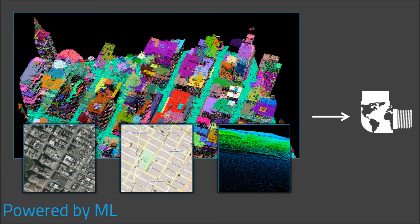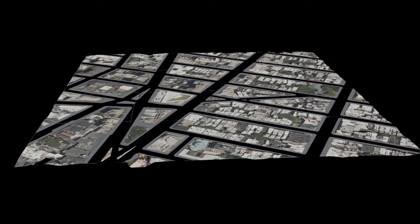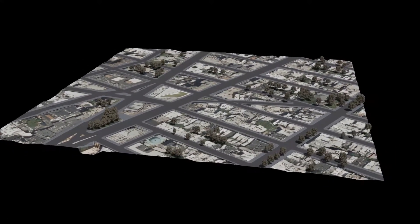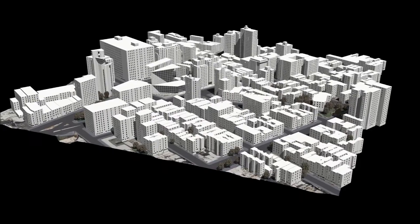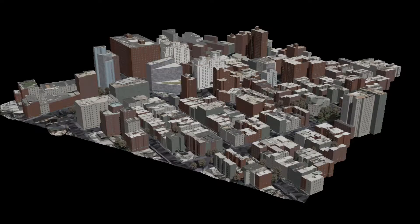Here's how it works. We start with raw data about the world, from laser scans to photographs and more. Our algorithms examine the data, understanding the shapes and facades of buildings, the locations of trees, roads, sidewalks, and water, and much more. We then turn that enriched understanding of the world into immersive, instantly available 3D models, optimized for interaction and rendering.